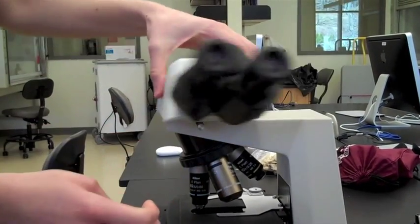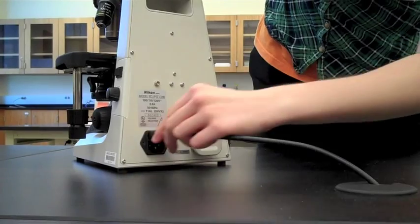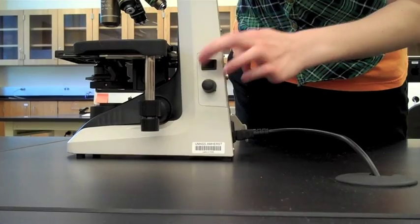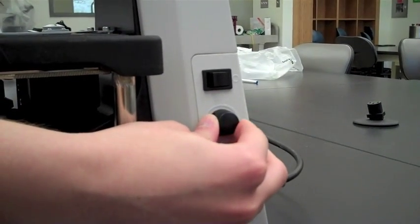Turn the silver dial to rotate the eyepiece. Make sure not to turn it too far. Plug the power cord into the back of the microscope. Flip the switch on the right to turn on the lamp. You can also adjust the brightness of the lamp.